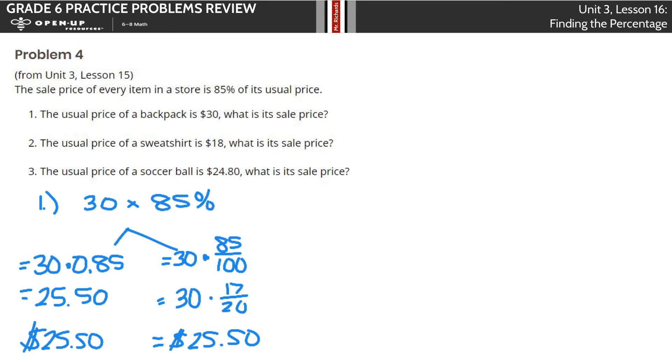What about number two? The usual price is $18.50. What's its sale price? Just to keep this simple and keep it moving along, I'll take 18 times the 85% here. Once I do that, the solution is 15.3. Don't forget that penny, so $15.30.